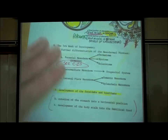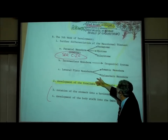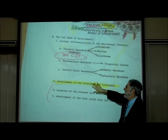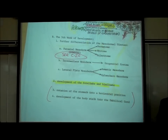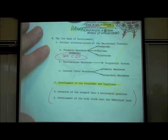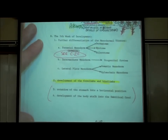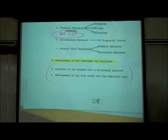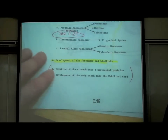During the fifth week, the intermediate mesoderm is becoming the urogenital system, and another important thing happens: the forelimbs and hindlimbs — the arms and legs — start to develop. Don't worry about items three and four on page C18, but you should know that the arms and legs start to form.